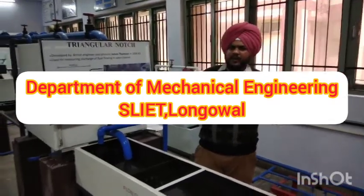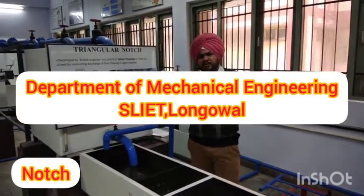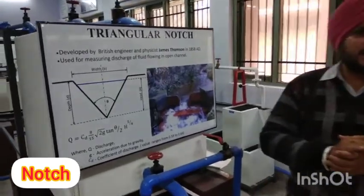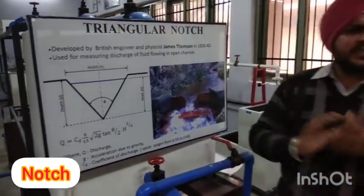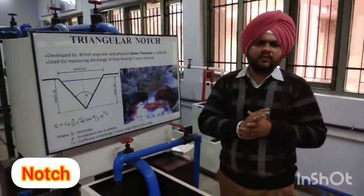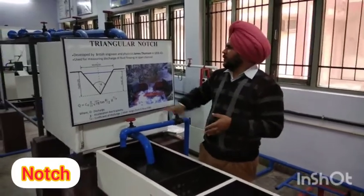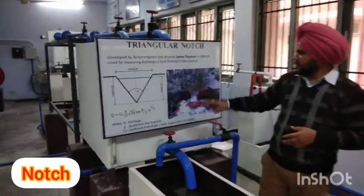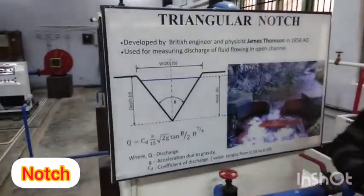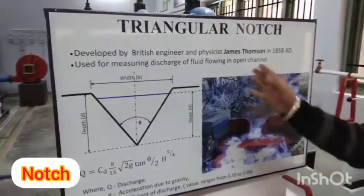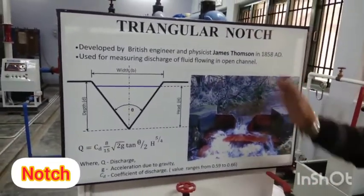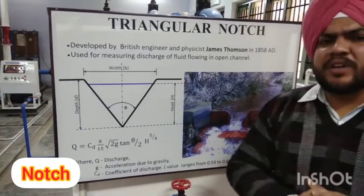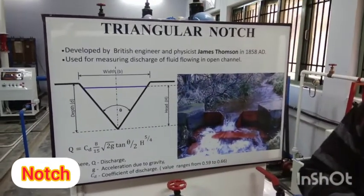Welcome to the Department of Mechanical Engineering, FM Lab. Now we will discuss the experimental coefficient of discharge with the help of a V-notch. First, we will discuss about the triangular V-notch. This was developed by British engineer James Thompson in 1988, and it is used to calculate the discharge of flow in an open channel.